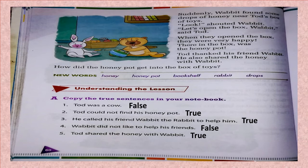I hope children you have understood the chapter. Read the chapter once again. Now let us solve Exercise A. You will do this work in your textbook itself — in your New Gul Mohar textbook. Copy the true sentences. Write true for true sentences and false for the sentences which are not correct. Do this in the textbook itself.